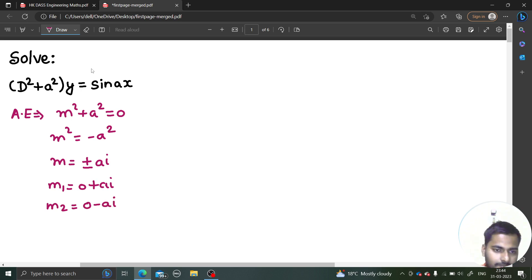Fine enough? Now, how to find complementary function in case the roots are imaginary? This is simply e power. If you compare 0 plus a iota and 0 minus a iota with a plus iota b.